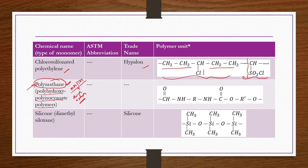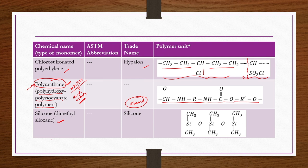Polyurethane repeating structure is CH=O, NH, R, NH, C=O, O, R'-O. Silicone or dimethylsiloxane, whose production we will discuss in the next lecture, has trade name silicone and is a high-temperature resistant oil with many applications. Its repeating unit is Si(CH3)2-O-Si(CH3)2-O-Si(CH3)2. Depending on how the silicon is connected to other molecules, the final properties of these silicone oils will change.